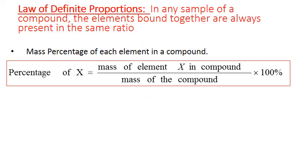The law of definite proportions states that in any sample of a compound, the elements that are bound together are always present in the same ratio. One way of representing that ratio is the mass percent, where the percent of any element X is equal to the mass of that element in the compound divided by the total mass of the compound, multiplied by 100 to make it a percent.